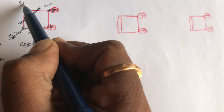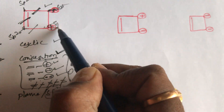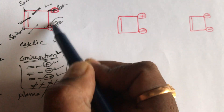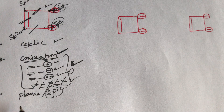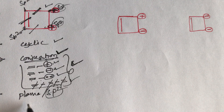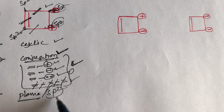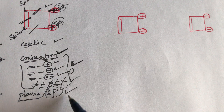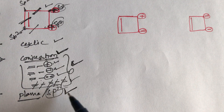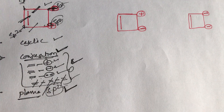Each carbon is sp2 hybridized. So all carbons undergo sp2 hybridization, which gives a planar shape. Therefore, the third condition is also satisfied — all carbons undergo sp2 hybridization with planar shape.